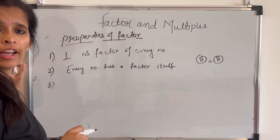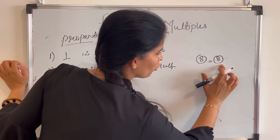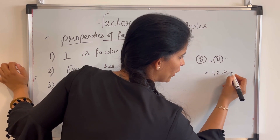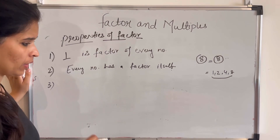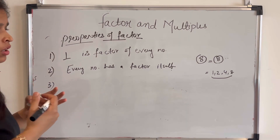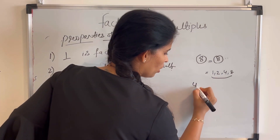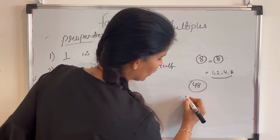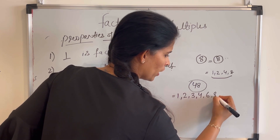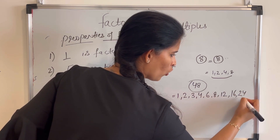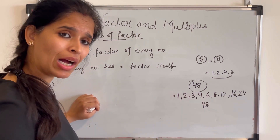The third property is: every factor is smaller than or equal to the given number. For example, factors of 8 are 1, 2, 4, and 8 — none of them exceed 8. The fourth property is: factors are always countable. When we found the factors of 48, we got 1, 2, 3, 4, 6, 8, 12, 16, 24, and 48 — we can count these numbers. So factors are always countable.